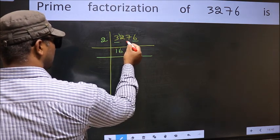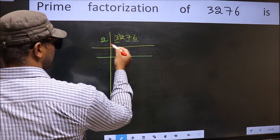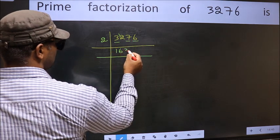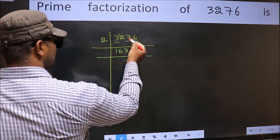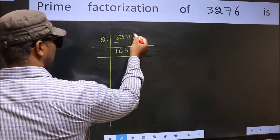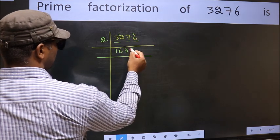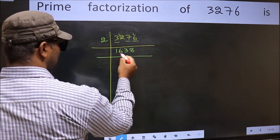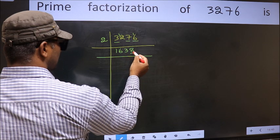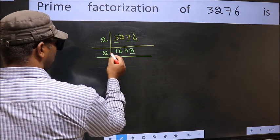The other number 7. A number close to 7 in the 2 table is 2 times 3 equals 6. 7 minus 6 equals 1, carry forward 16. When do we get 16 in the 2 table? 2 times 8 equals 16. Now the last digit is 8, so take 2.